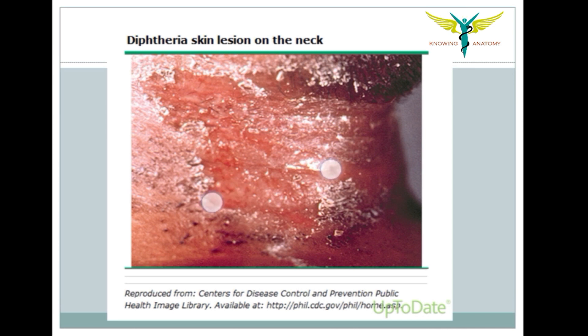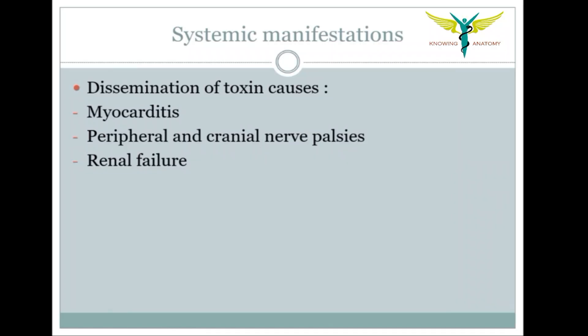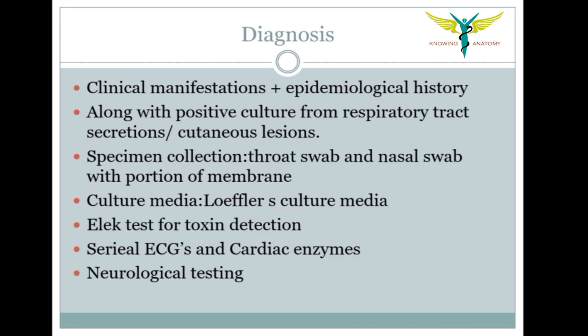Skin lesions are formed on the neck in cutaneous diphtheria. Coming to the systemic manifestations, these are caused by dissemination of the toxin, which causes myocarditis, peripheral and cranial nerve paralysis, and renal failure. Diagnosis is mainly based on clinical manifestations and the epidemiological history.